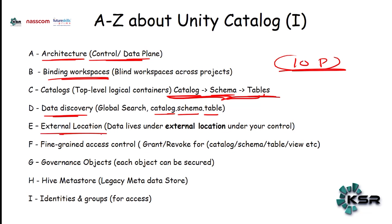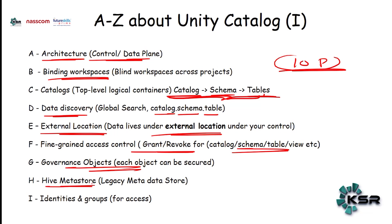We can store data at one place and access it wherever we want — across workspaces. We can also create metadata for external data. Imagine data stored in some other cloud — you can still have control over who can access it, when, and what they're doing. You can also grant and revoke access for schemas, tables, views, and each and every object can be protected — that is a best feature of data governance. The legacy metastore system has now been replaced by Unity Catalog.